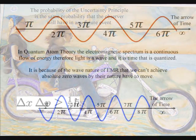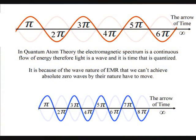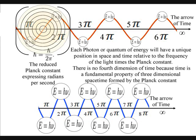We live in a dynamically evolving universe of continuous change. Because waves by their nature have to move, therefore we cannot achieve absolute zero and all atoms radiate light or electromagnetic radiation continuously.